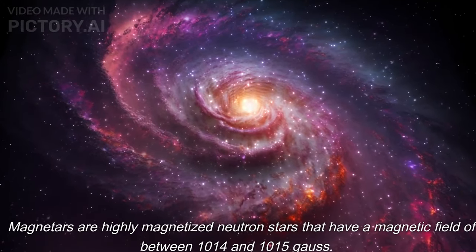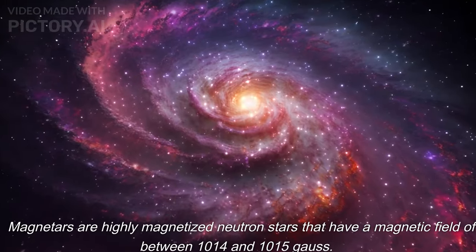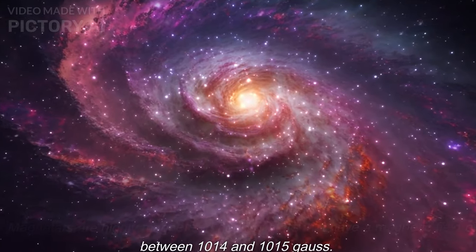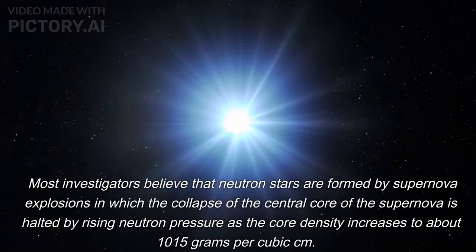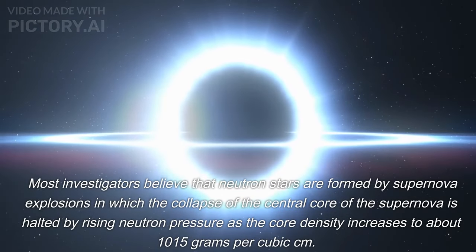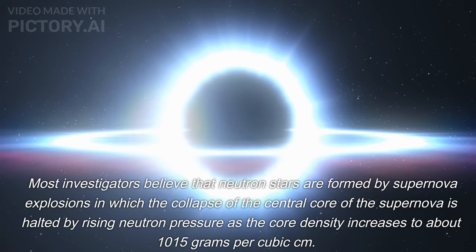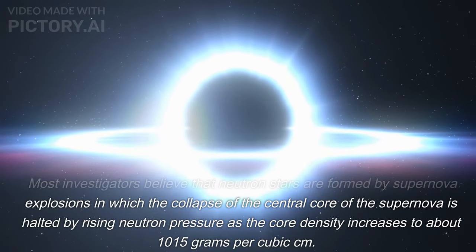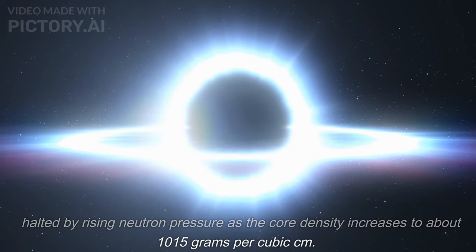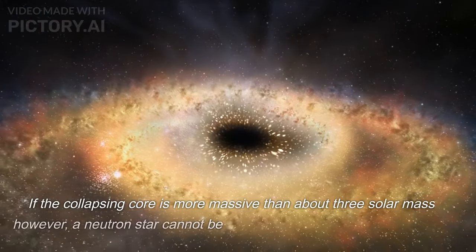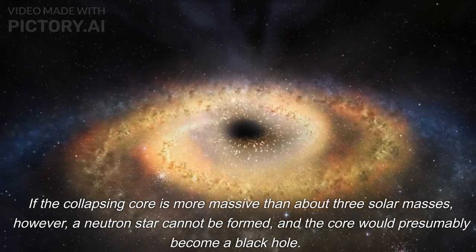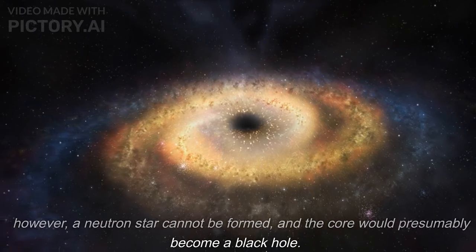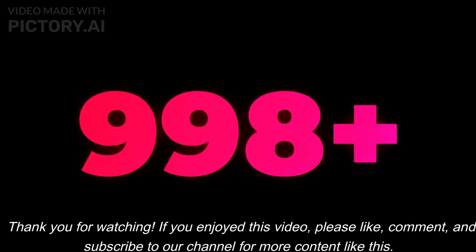Magnetars are highly magnetized neutron stars that have a magnetic field of between 10^14 and 10^15 Gauss. Most investigators believe that neutron stars are formed by supernova explosions in which the collapse of the central core of the supernova is halted by rising neutron pressure as the core density increases to about 10^15 grams per cubic cm. If the collapsing core is more massive than about 3 solar masses, however, a neutron star cannot be formed, and the core would presumably become a black hole.